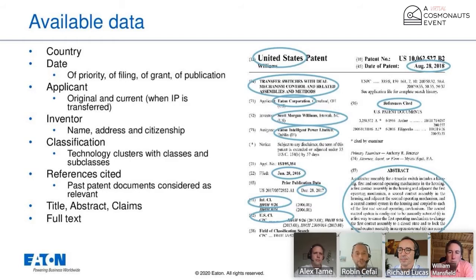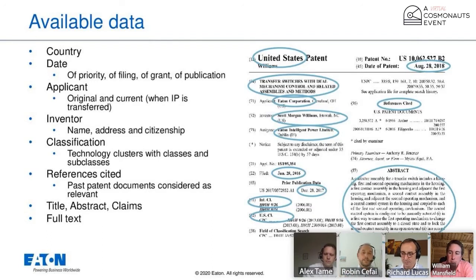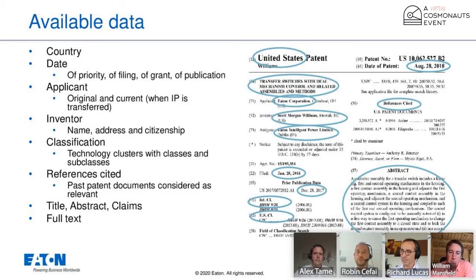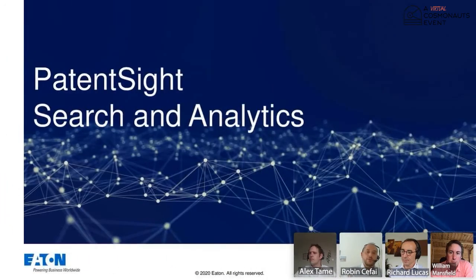We cannot do extensive due diligence on every company we cross paths with. So while the rest of IP, in the case of acquiring an established business, is maybe even more important than the patent, the fact that we have all this structured information available in the patent area gives us an entry point and a structured approach — otherwise there's just too many companies out there and you don't know where to start. That's what I've used PatentSight for in the last few years, focusing on identifying companies.